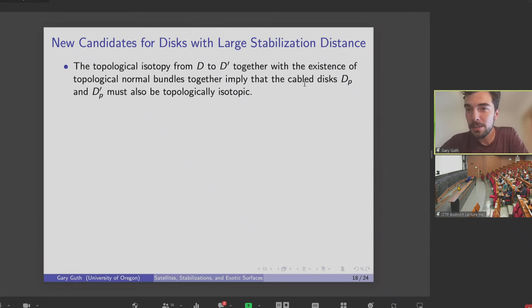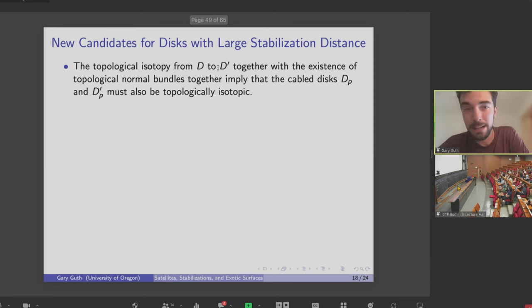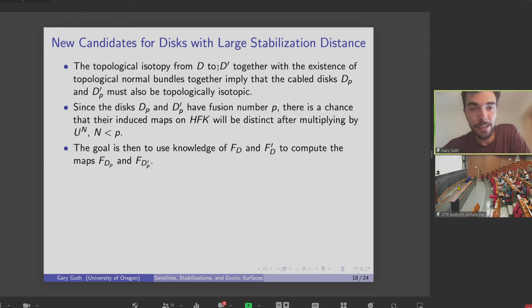So it also turns out that these cable disks that I've shown here on the right are still topologically isotopic. And this just follows from the fact that I had a topological isotopy from D to D prime. And the existence of topological normal bundles tells me that this immediately gives me a topological isotopy between the cable disks. Like I said, these disks have now lots of saddles necessarily. So there's some hope that if I multiply by U lots of times, the maps will remain distinct. So the last thing to do is figure out if you can compute the maps induced by these cable disks by bootstrapping some knowledge about the maps induced by the original disks.